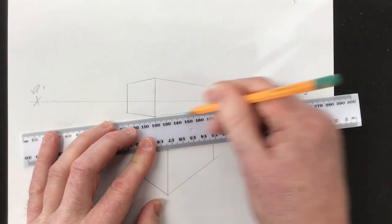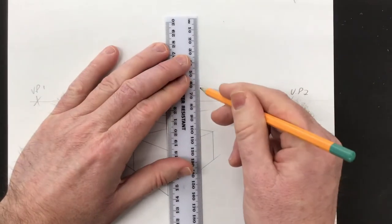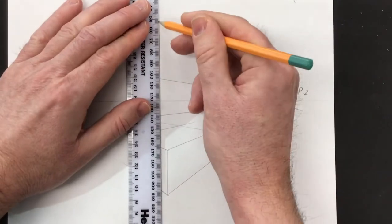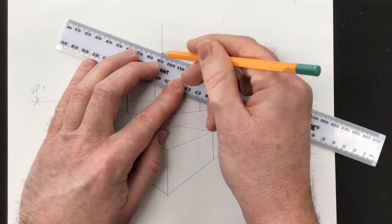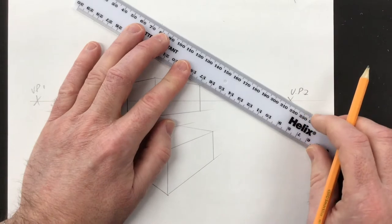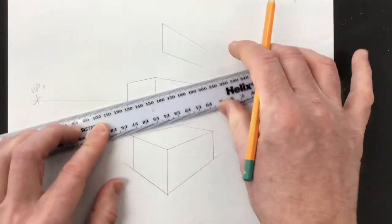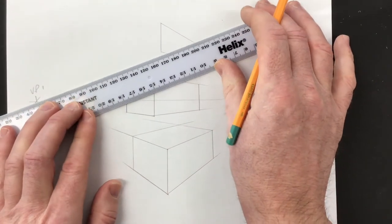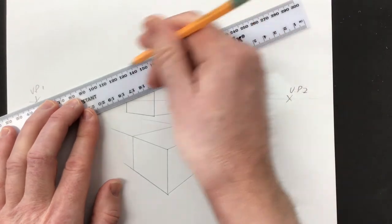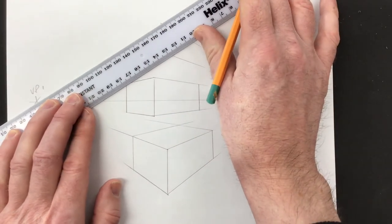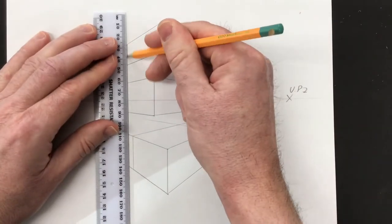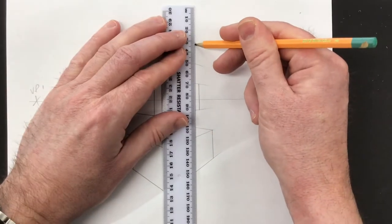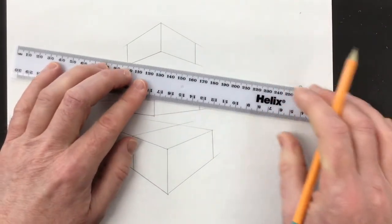And then the next one we're going to do is above the horizon line. So again, the nearest vertical is the starting point. Two lines to VP2, two diagonal lines there, two on the other side. And then once you've done that, you then put your verticals in. Then you put the bottom in by going to VP2 on that side and VP1.